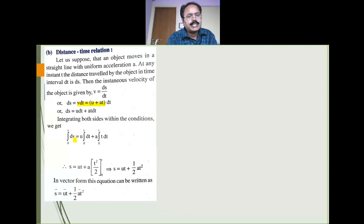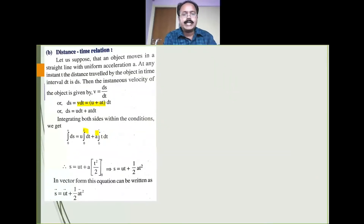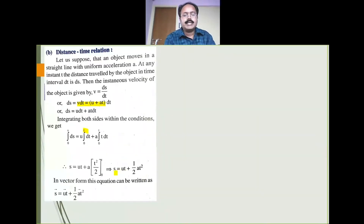Integrating ds gives s with limits 0 to s, and time limits 0 to t. So s equals u times t plus a into t square by 2, which gives s equal to ut plus half at square. This is the second equation of motion.